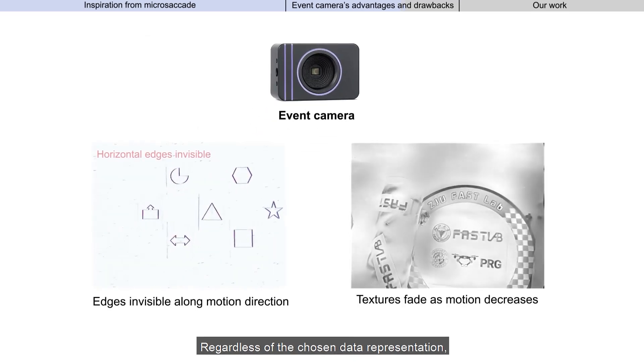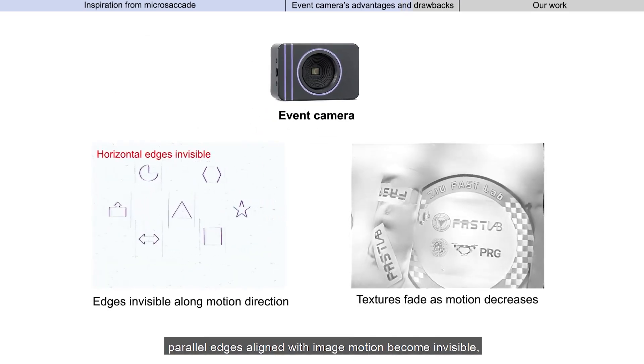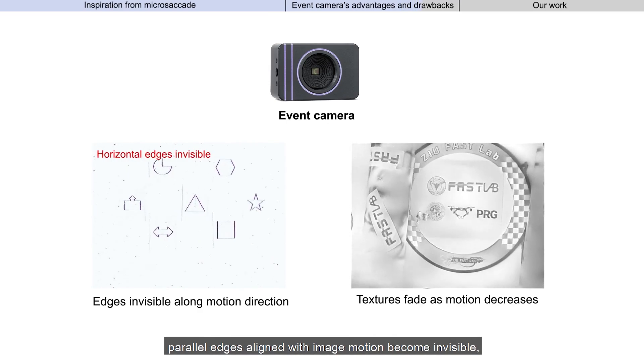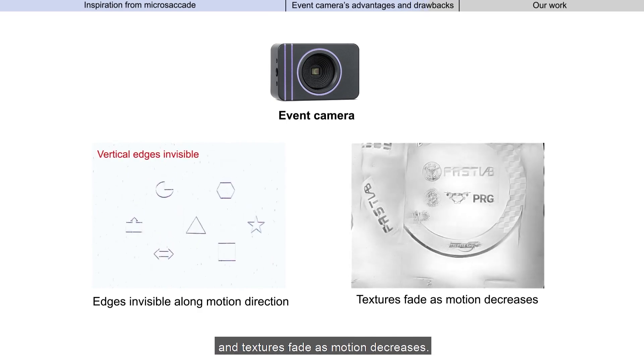Regardless of the chosen data representation, parallel edges aligned with image motion become invisible, and textures fade as motion decreases.